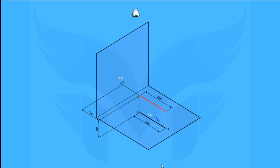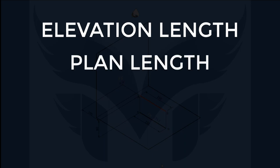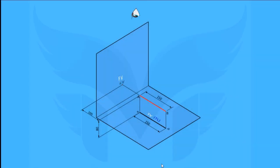So far we have discussed only two cases of a line with few examples of each type. We also came across new terms and notations: elevation length, plan length, angle theta, and angle phi. In the next video, we will see the third case in which the line is inclined to both the HP and the VP. After that, we will look at how to draw every case on paper — that is, how to solve the problems of projection of lines.